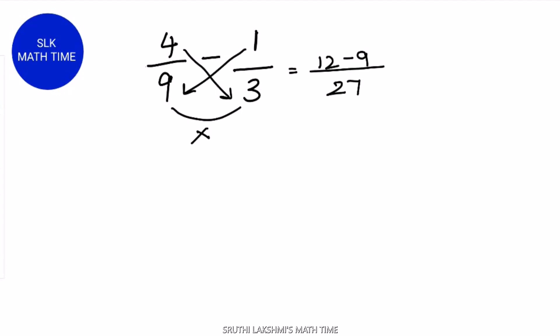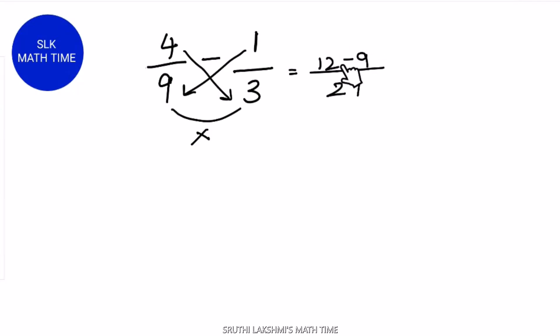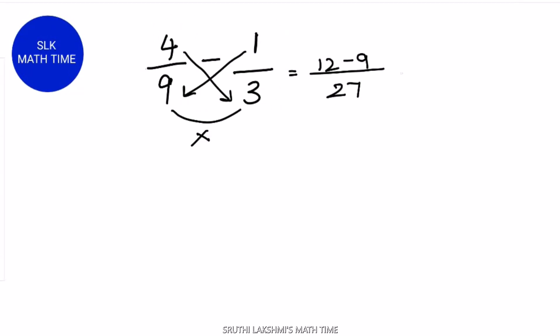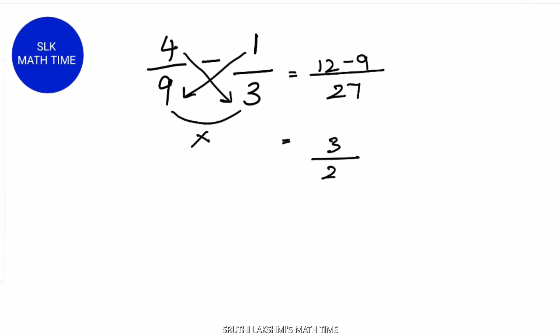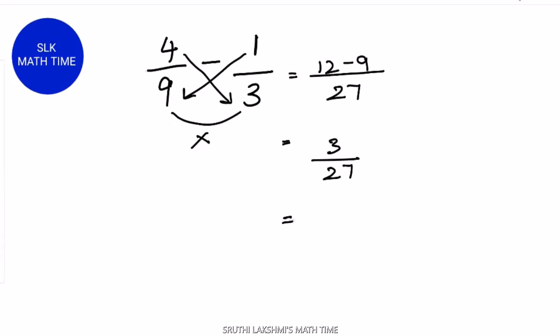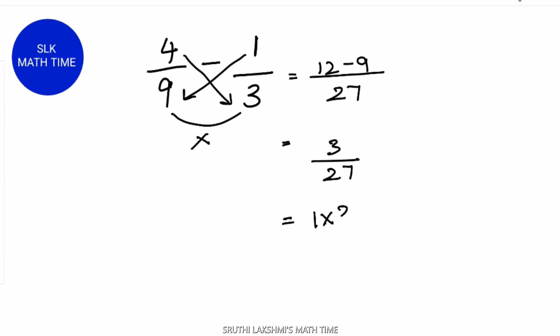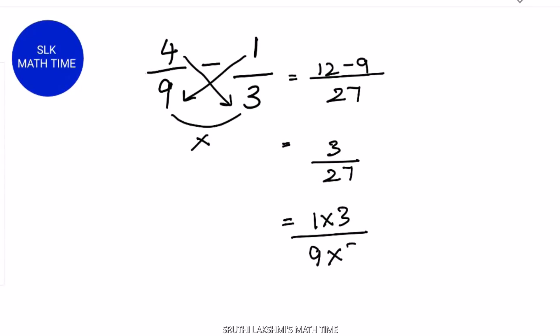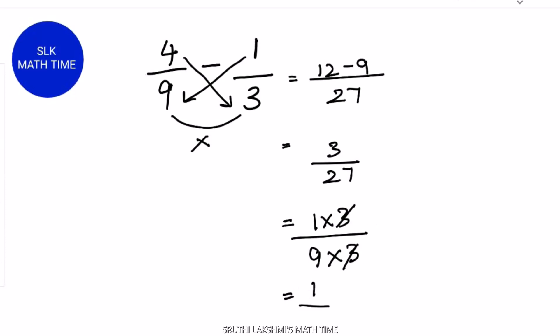Instead of adding 12 plus 9, this time we subtract because we are subtracting the fractions 4 by 9 minus 1 by 3. So we subtract 12 minus 9 which is 3 by 27. Now, 3 and 27 are divisible by 3. 3 goes 1 time in 3 and 27 goes 9 times in 3. Next, we cross cancel 3 and 3 to get our final answer which is 1 by 9.